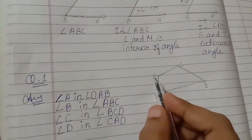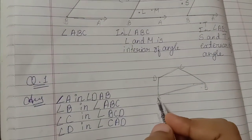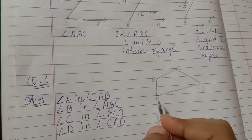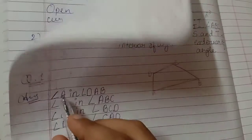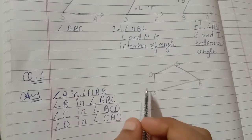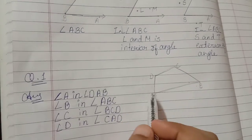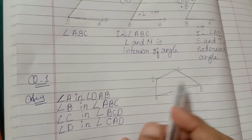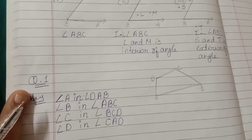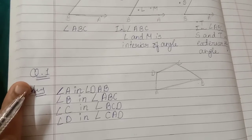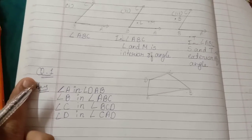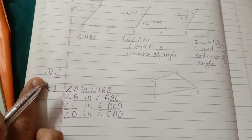How many corners? A corner is also called a vertex. So at vertex A it is angle DAB, at B it is angle ABC, at C it is angle BCD, and at D it is angle CDA.